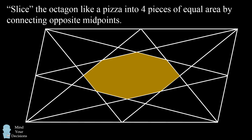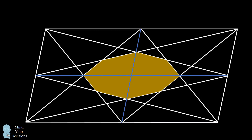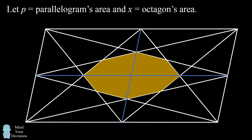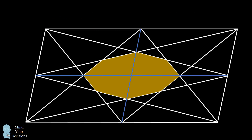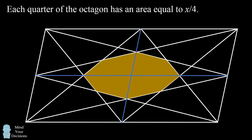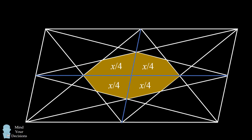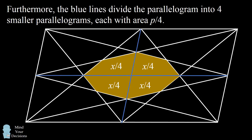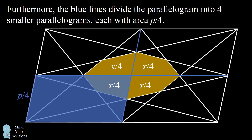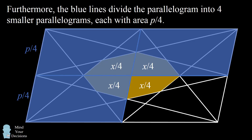The first step is to slice the octagon like a pizza into four pieces of equal area by connecting opposite midpoints of the parallelogram. Let p be the parallelogram's area and let x equal the octagon's area. We're searching for the ratio x over p. Each quarter of the octagon has equal area, so each quarter will be equal to x over 4. We've also divided the parallelogram into four smaller parallelograms, and each of these will have one quarter the area of the parallelogram, so each is p over 4.